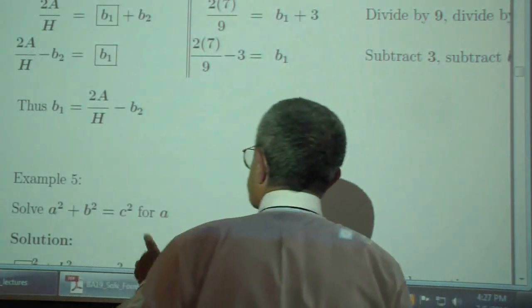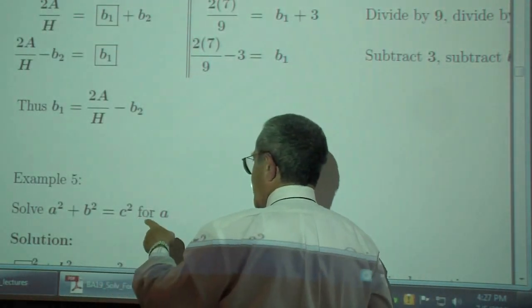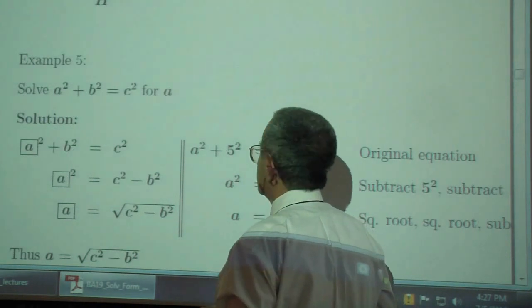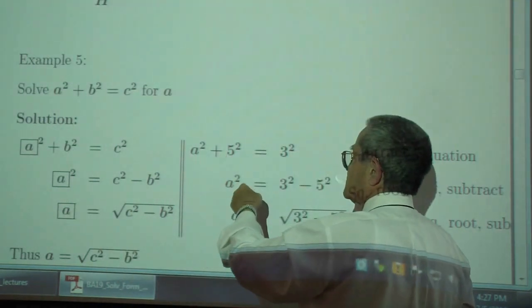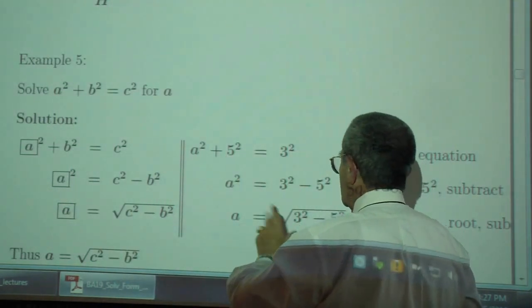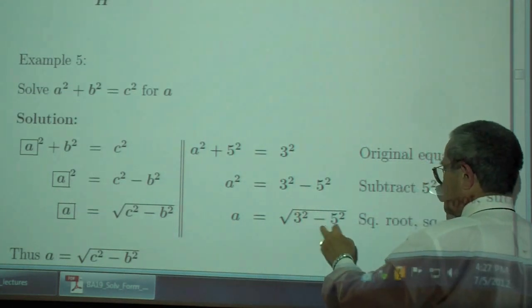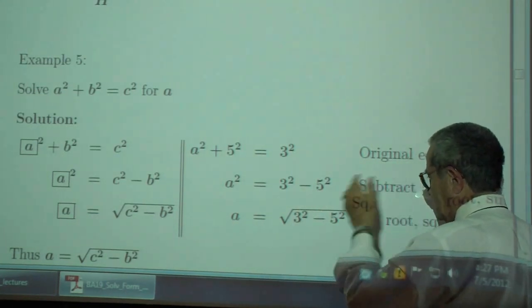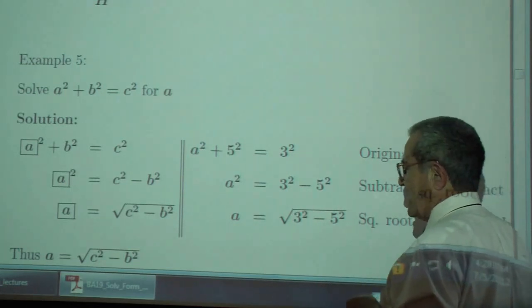Example 5. Solve a squared plus b squared, which is c squared, for a. So you have a squared, this is a, this is b. Don't worry about this being a negative number. These are just numbers to guide you, not to come out with an answer.